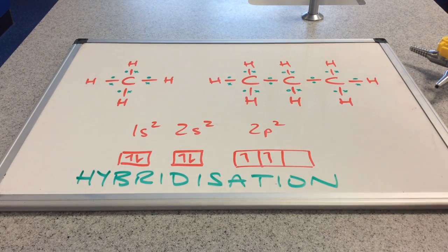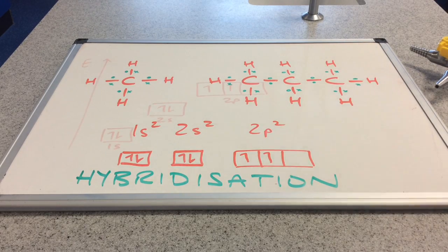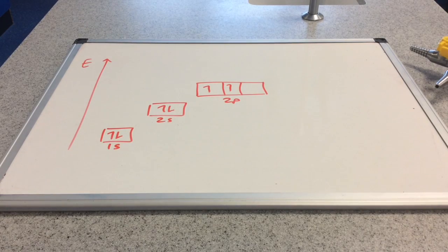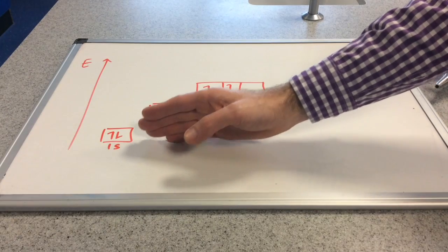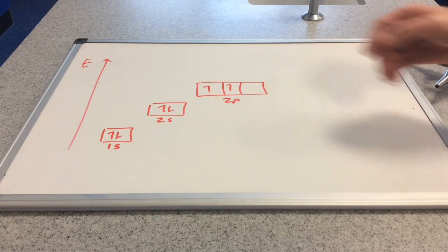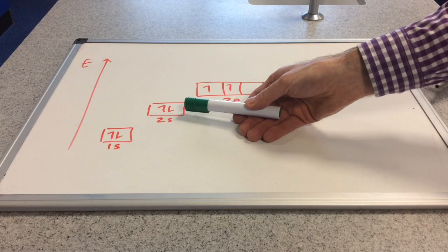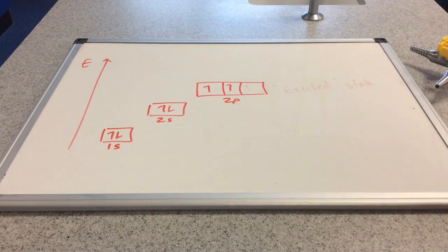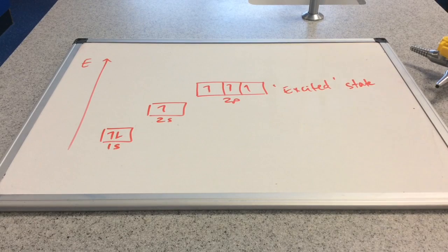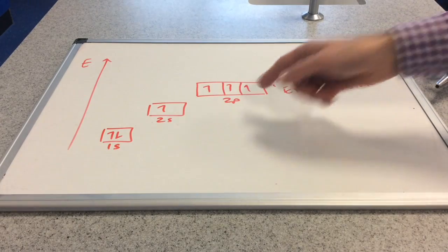Well, to explain this, we need to bring in something known as hybridisation. So I'm representing the subshells now on an energy ladder, so we've got the 1s subshell lowest in energy, and then 2s, and then 2p. So what happens is one of these 2s electrons actually becomes excited, and so that gives us something that looks like this. And you can now see that we've actually got four unpaired electrons.